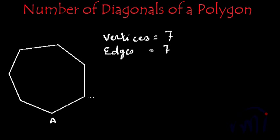Let this be A, B, C, D, E, F, and G. We have seven vertices. And now let's talk about diagonals. So if I start from point A, how many total diagonals can I draw?